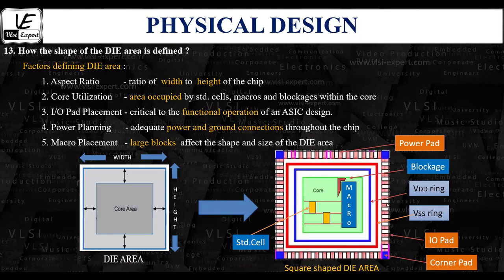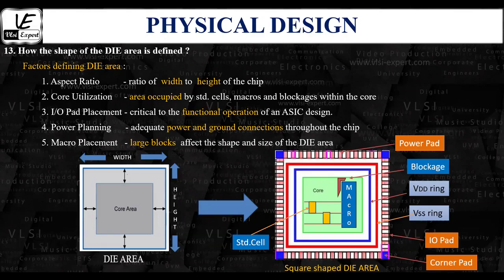Then there is the IO pad ring, which consists of the IO pads, power pads, and other necessary cells like filler pads that are used to fill the gaps between the IO pads, and the corner pads at all four corners of the area. Considering all these components, we define the shape of the die based on several factors that take into account the overall design requirements and constraints.